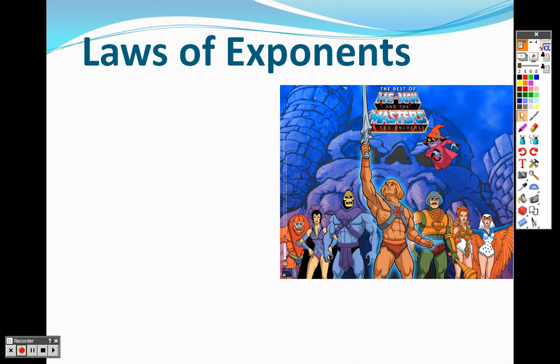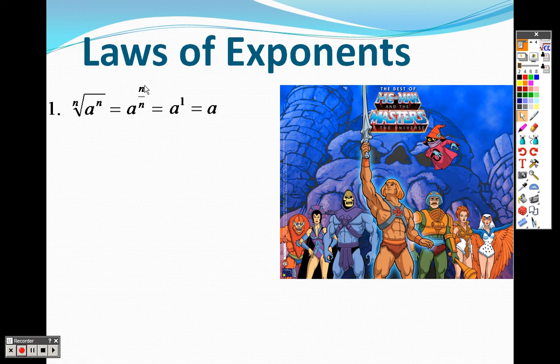Some more laws with exponents: the nth root of a^n, when you rewrite that, you write it as a to the n over n. You take whatever's inside underneath that root, and it's like saying n times one over n, which is n over n, which is 1, and a to the first power is just a.